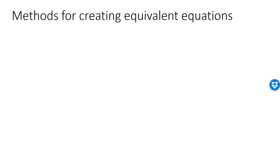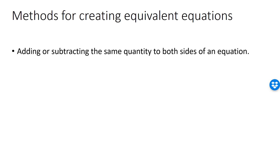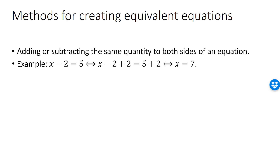Simpler equations can often be solved analytically. There is no general procedure; rather, we have a set of strategies to select from. The basic strategy is to create a simpler equivalent equation using the rules for equivalent equations. For example, adding or subtracting a number from both sides gives an equivalent equation. We can use this to solve x minus 2 equals 5: adding 2 to both sides simplifies the left-hand side to x, giving the solution x equals 7.